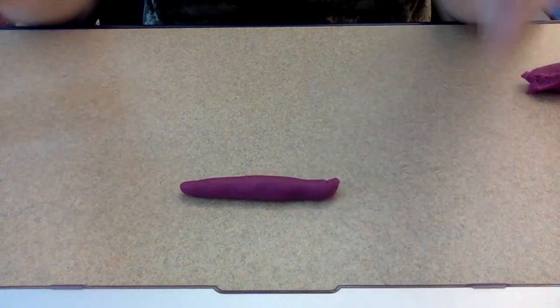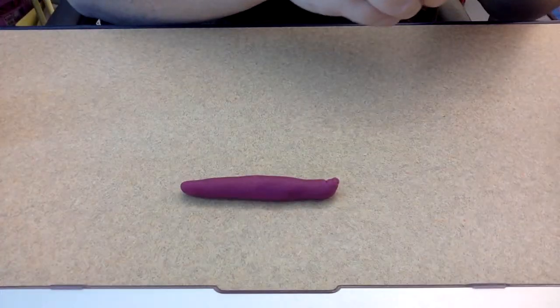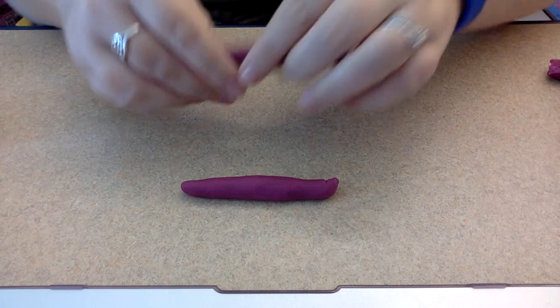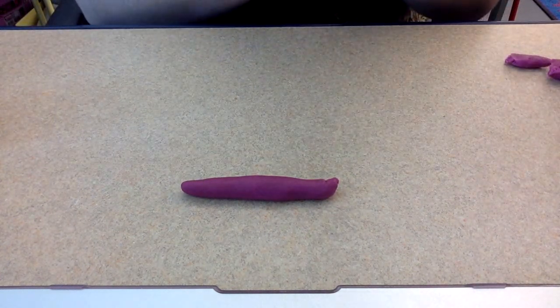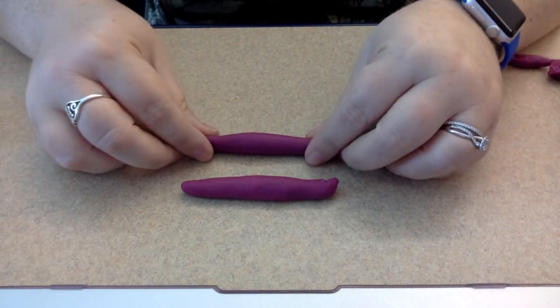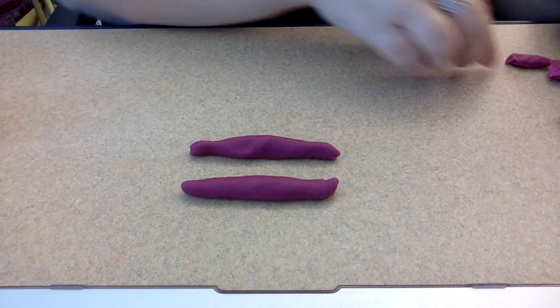Now remember, if I'm making a square, I need all of my sides to be the same. So what I might even do is I may line up my four pieces to make sure that they're the same length, that they're the same size.